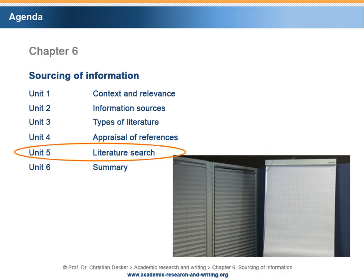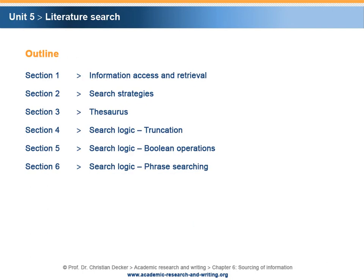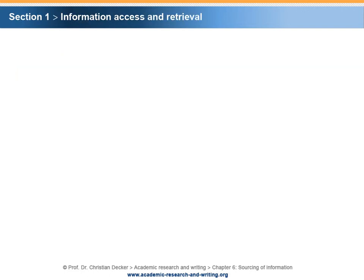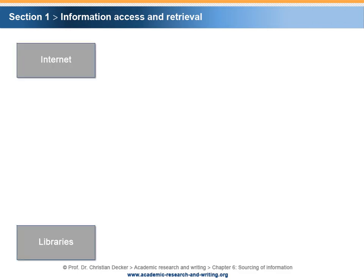Unit 5 – Literature search. This unit is divided into six sections. Section 1 – Information access and retrieval. Generally, information can be accessed and retrieved via the Internet and in libraries.